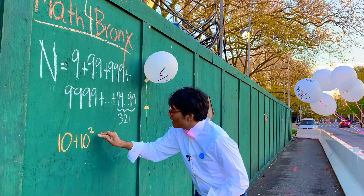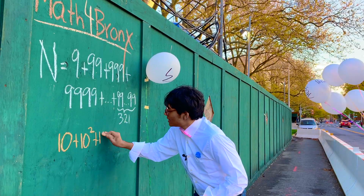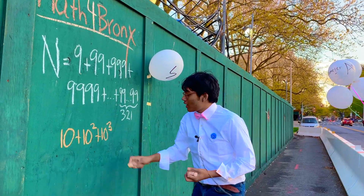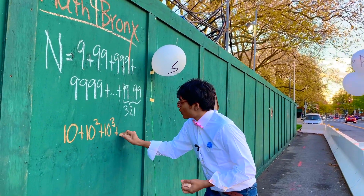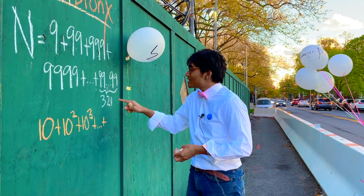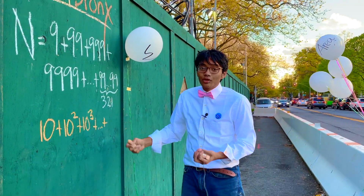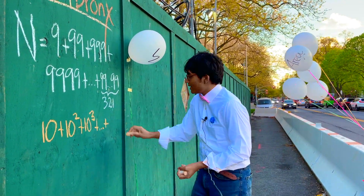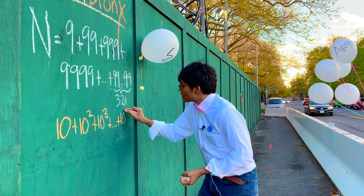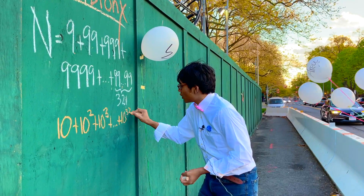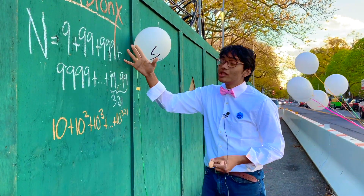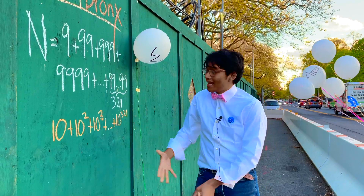What's 999 plus 1? Well, it's plus 10 cubed, or a thousand — and so forth until you reach the final term in the series, which is 9 followed by 321 nines. So now we've got 10 plus 10 squared plus 10 cubed, all the way to 10 to the 321st power.